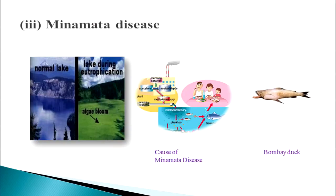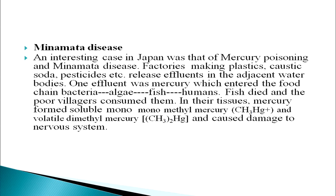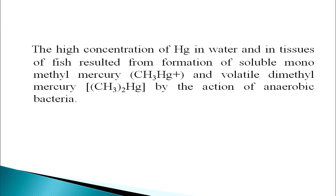Next is Minamata disease. An interesting case in Japan was that of mercury poisoning and Minamata disease. Factories making plastics, caustic soda, pesticides, etc. released effluents into the adjacent water body. One effluent was mercury, which entered the food chain through bacteria, algae, fish, and humans. Fish died and poor villagers consumed them. In their tissues, mercury formed soluble monomethyl mercury and volatile dimethyl mercury, causing damage to the nervous system. The high concentration of mercury in water and fish tissues resulted from formation of these compounds by the action of anaerobic bacteria.